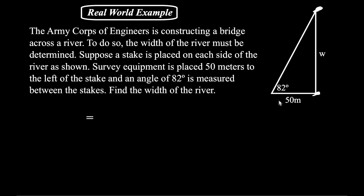In our next example, an Army Corps of Engineers is constructing a bridge across a river. They pound stakes on each side of the river, where W is the width of the river. From 50 meters from one stake, they use surveying equipment to measure an angle of 82 degrees between the two stakes. We need to find the width of the river.